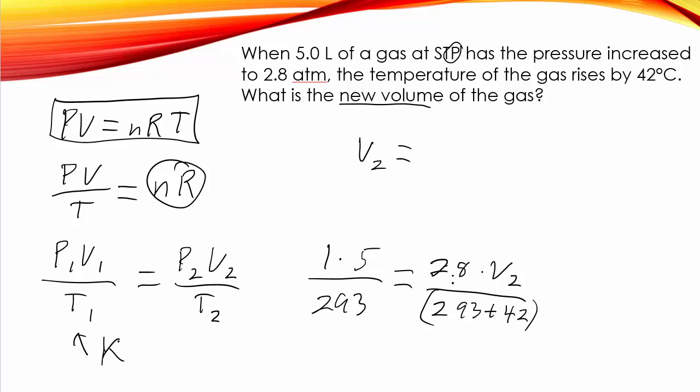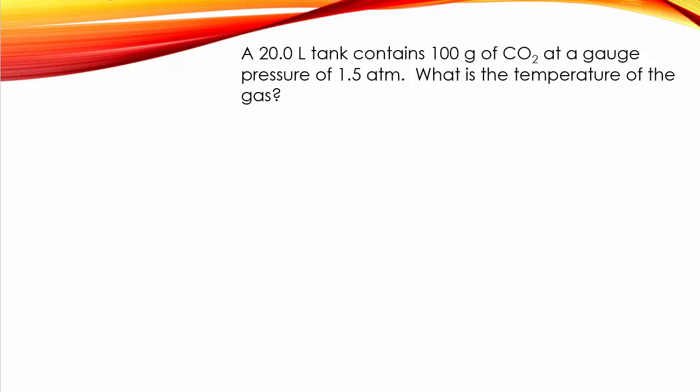And we just have to solve this for V2. So make sure that you rearrange things correctly. This works out to 293 plus 42 over here times 5 divided by 293 times 2.8. And we get just about 2 liters is the new volume of gas. So we had to compress it quite a bit.